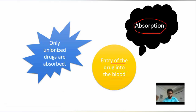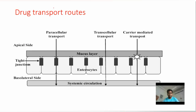One important thing: only the unionized form of drugs is absorbed. A drug molecule will be unionized at a certain pH — for example, at the stomach environment. At whichever pH the drug molecule is unionized, at that particular pH it will be absorbed.